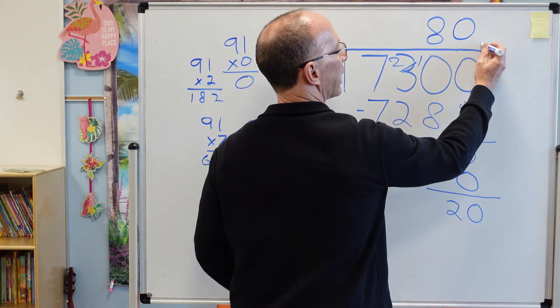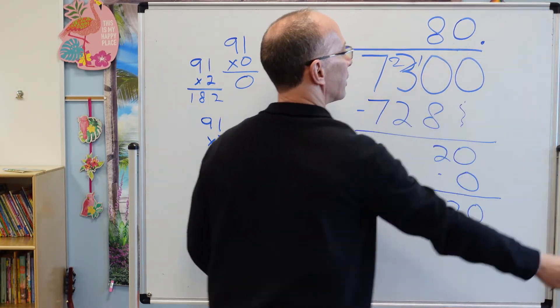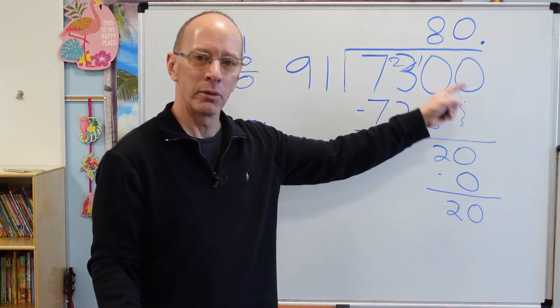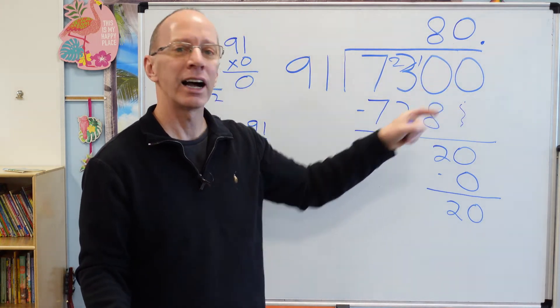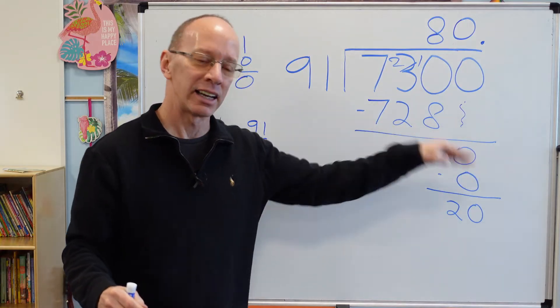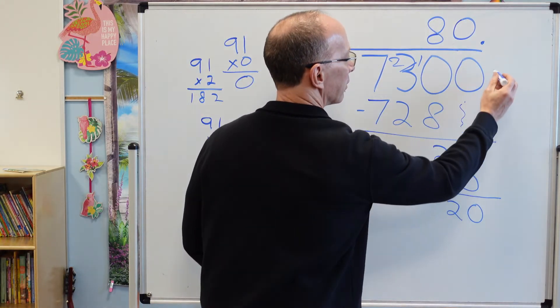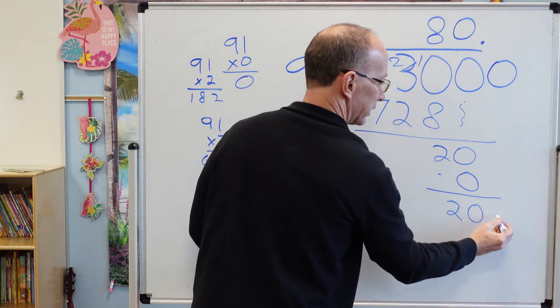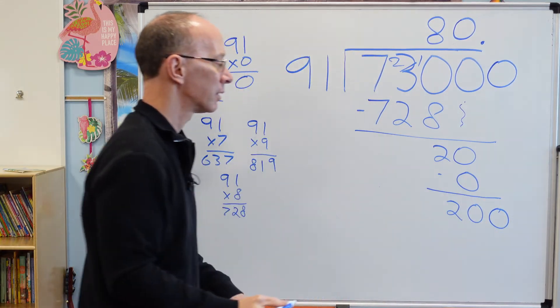That's where we start to make a decimal point right here. We put a decimal point. Once I put a decimal point right there, I can put as many zeros on that side as I want to. So now I'm going to bring a 0 down. Put a 0 here and bring it down all the way here.